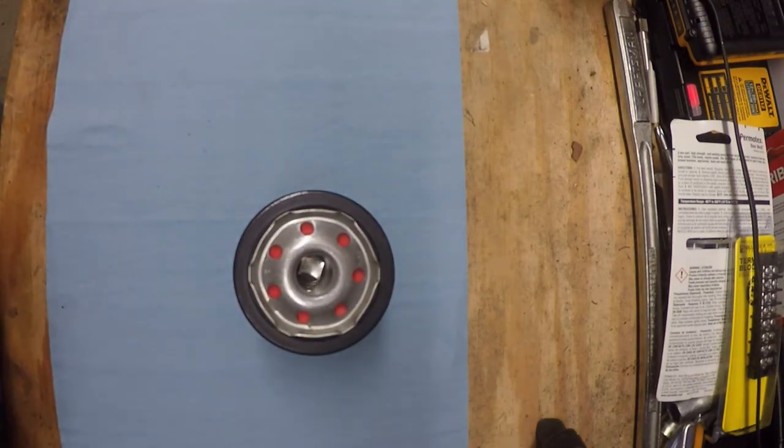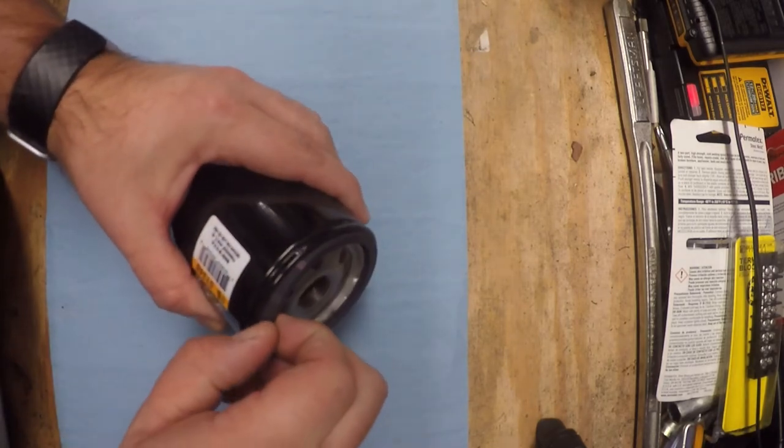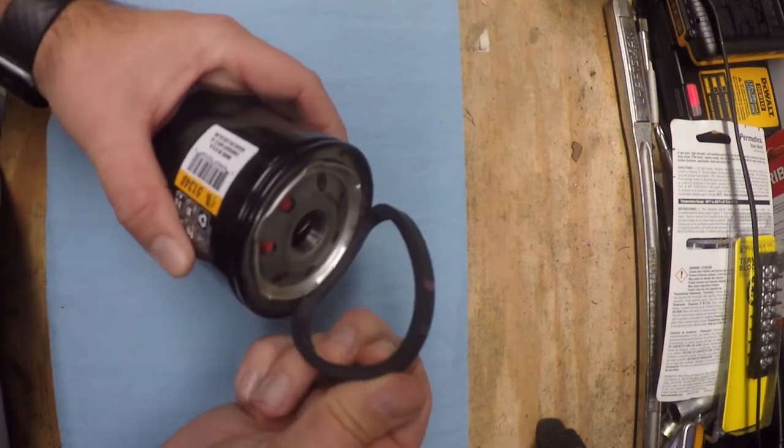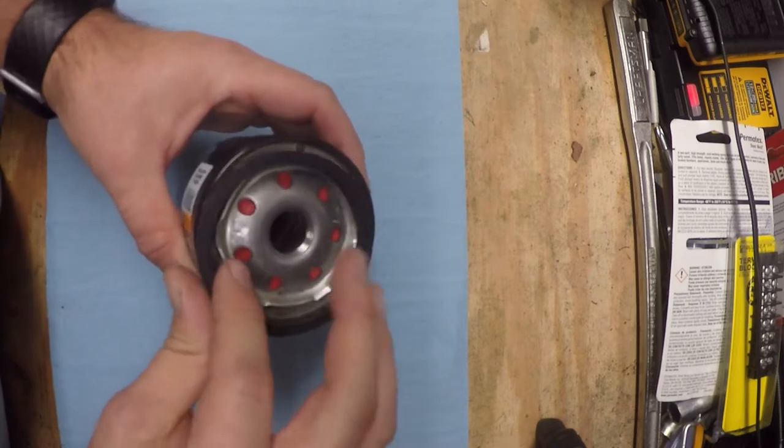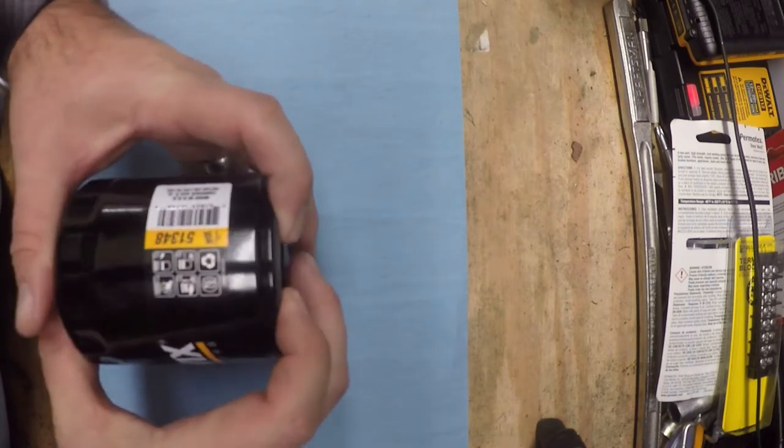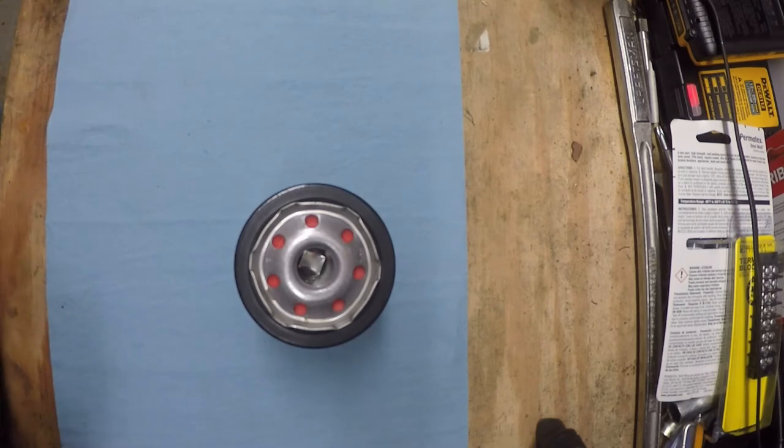So what are the components of an oil filter? The first one I wanted to talk about briefly is the seal, and that's just this rubber seal that is on the outside of the oil filter. What that does is it creates a good seal between the mounting surface on your engine and the oil filter so there's no leaks.